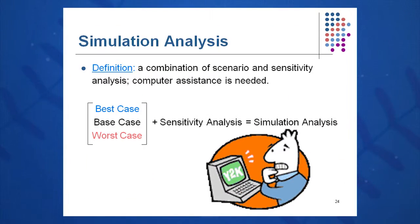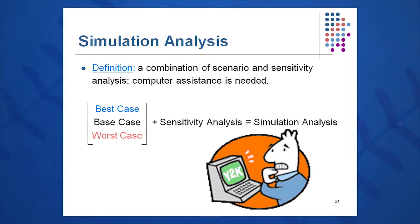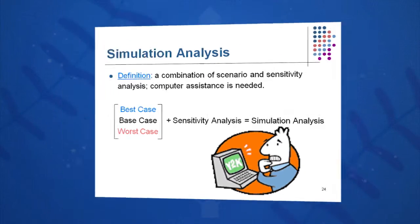The third type of what-if analysis is simulation analysis, which is a combination of scenario and sensitivity analysis, where we take the best case, worst case, and base case and do a sensitivity analysis in combination — in essence, vary everything. With the advent of personal computers, laptops, and netbooks, we can do these analyses very quickly. Back in the 1980s, you'd do these things mostly by hand, which was difficult and challenging. Now you can spin these out in a few minutes, and you can reuse that software over and over again.